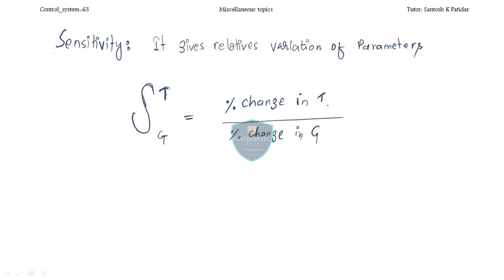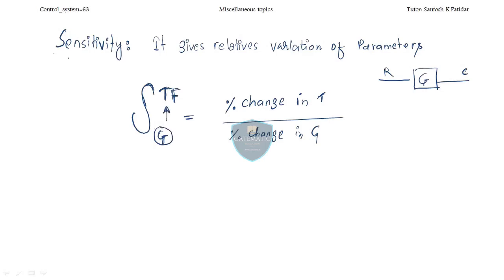The first topic we are going to discuss today is sensitivity. Sensitivity gives the relative variation of parameters. This is the sensitivity of the transfer function — the TF — with respect to parameter G. G is the open-loop gain of the system.